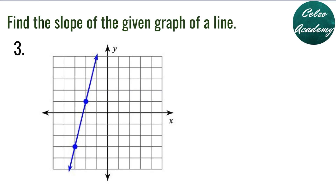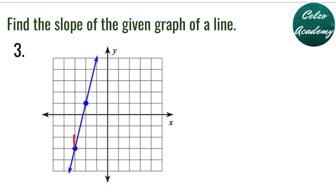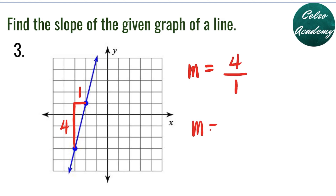Question number 3: find the slope of the given graph. Starting from the lower point, we draw a right triangle. The slope is 4. From the lower point, we go 4 units up and 1 unit to the right. Rise is 4, run is 1, and 4 divided by 1 is 4. So the slope here is 4.